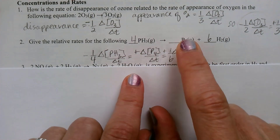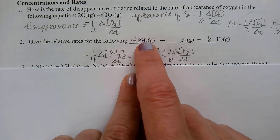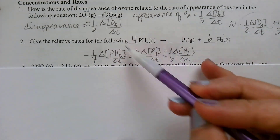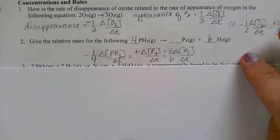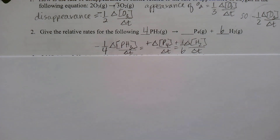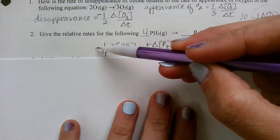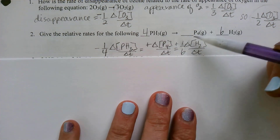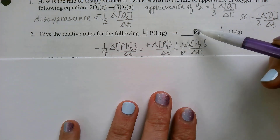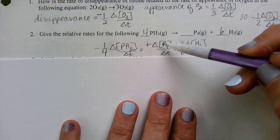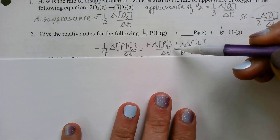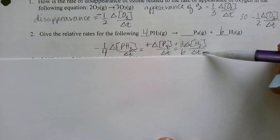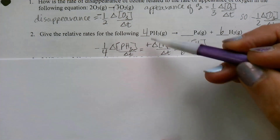I had to first balance this reaction. I looked at the right side and said there are 4 P's, so I need 4 P's on the left, which gave me 12 H's, so I needed 12 H's on the right. Knowing those coefficients, I can look at the relative rates for the disappearance of PH₃ and the appearance of the products. For every 1 mole of reaction, PH₃ loses 4 moles. P₄ has a 1 to 1 ratio, so 1 over 1, and H₂ has a coefficient of 6. Appearances are positive, disappearance is negative.